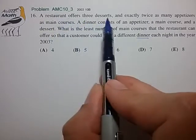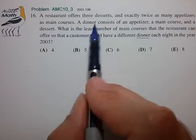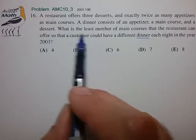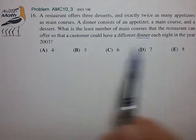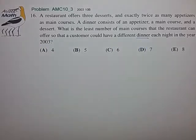A restaurant offers three desserts and exactly twice as many appetizers as main courses, and a dinner consists of an appetizer, a main course, and a dessert. What is the least number of main courses that the restaurant can offer so that the customer can have a different dinner each night of the year?